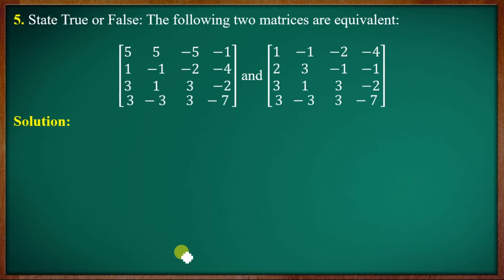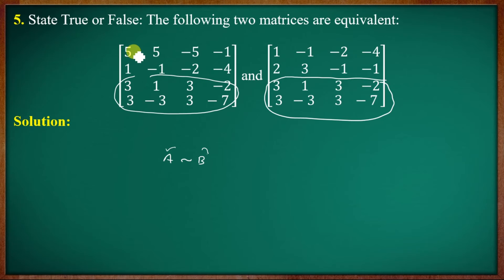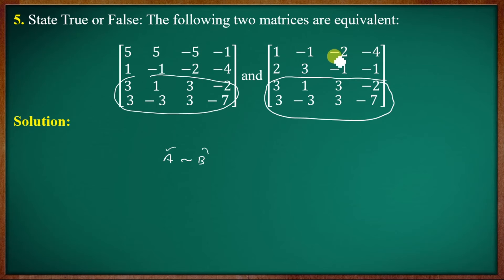Fifth question: state true or false — two matrices are equal. If two matrices are equal, this follows from the elementary row transformation. After row transformations, we get a diagonal matrix with entries 5, 0, 0, 1, 1, 1. This is the identity-like diagonal form.